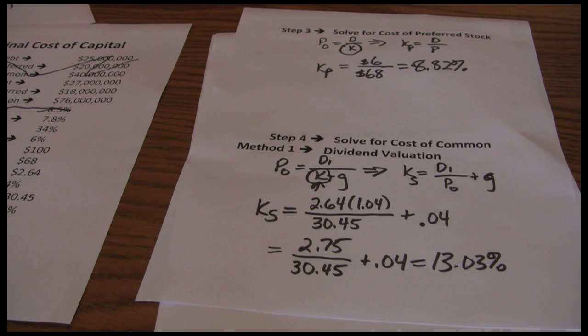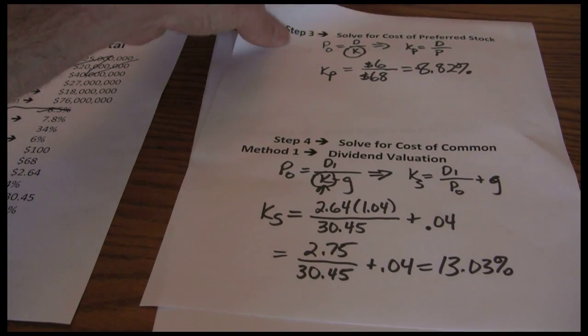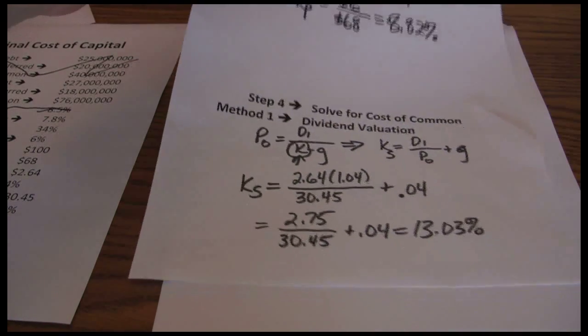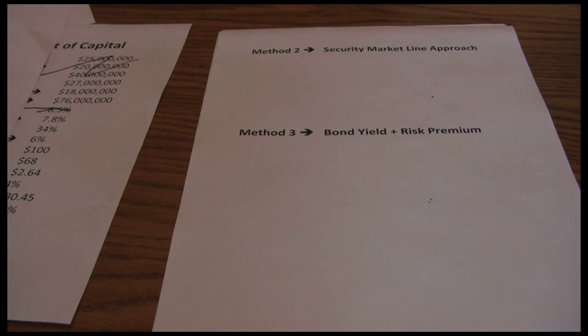So the dividend valuation model is an approximation, an approximation that works well for companies with stable growth rates and works poorly for companies with unstable growth rates. Does not work at all for companies that do not pay dividends. So we need a backup model. And that's where we're going to be going to our next video is our backup models. There's actually two of them that we're going to introduce.